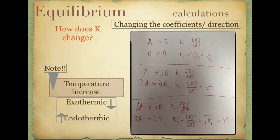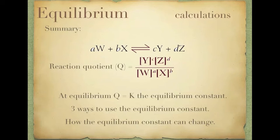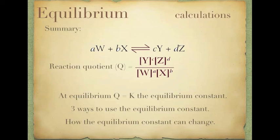So there are some important things about K that you need to know. Do a whole bunch of problems involving equilibrium constants — there are plenty in your textbook and in the Cambridge Checkpoints. The summary covers how to write the reaction quotient, that Q equals K at equilibrium, how to use that to determine which way the reaction will go, and how the equilibrium constant changes based on temperature and changes to the equation itself.